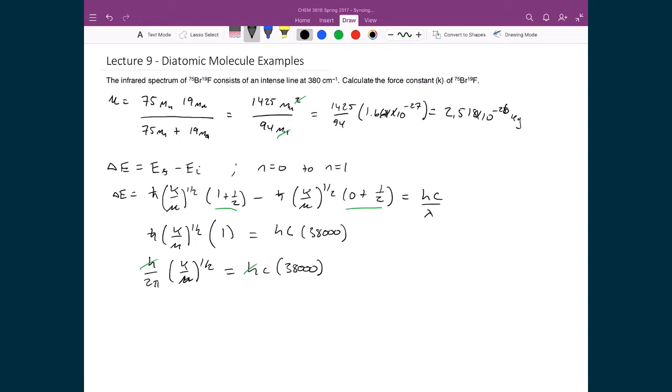So I have the square root of k divided by mu times 1/2 equals 2π times c times 38,000. I'm going to square both sides and multiply by mu, which means k equals 4π² c² times 38,000 squared times mu, which was 2.518 times 10 to the minus 26. So my force constant is equal to 129 newtons per meter.